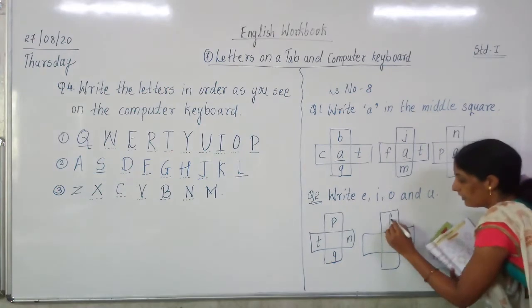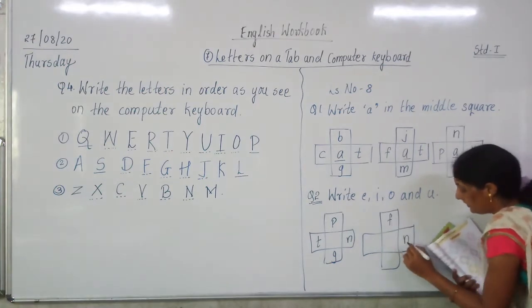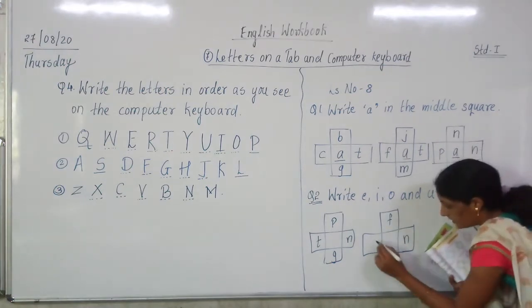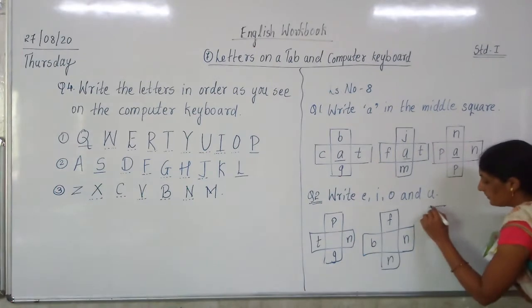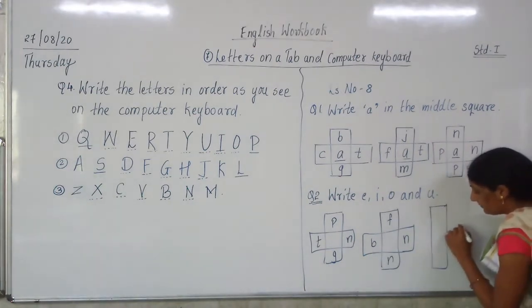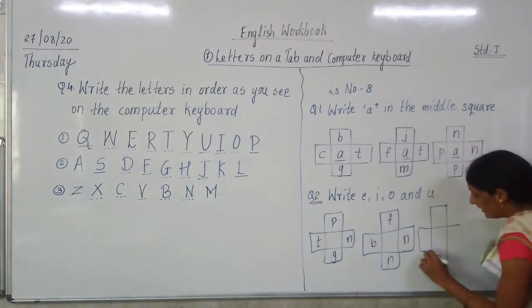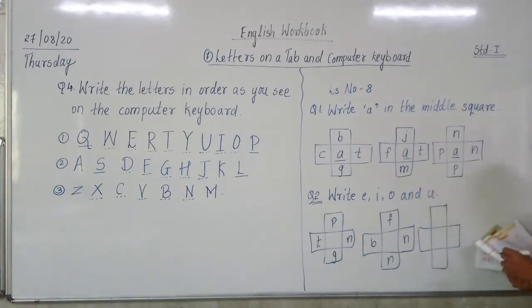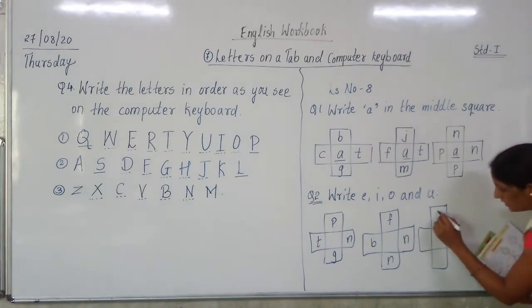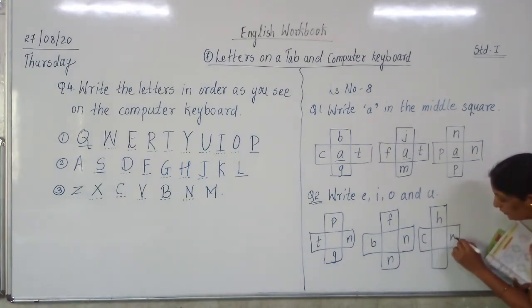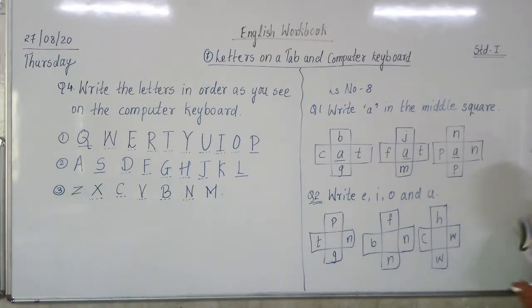The second box has F, N, N and B. The third box has letters H, C, W and W.